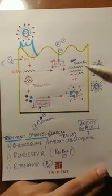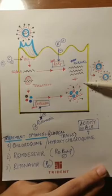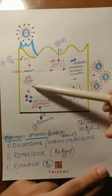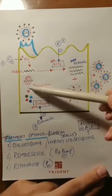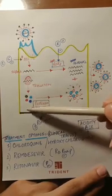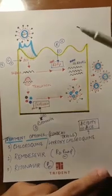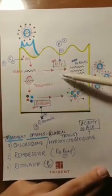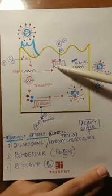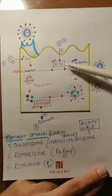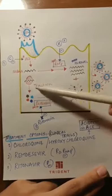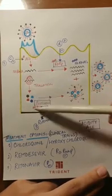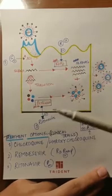The second thing is that it will go to the ribosomes and then there will be translation, and this will form various proteins. To repeat: here we have the single-stranded RNA. Either it will be acted upon by the RNA-dependent RNA polymerase, or it will be taken up by the ribosomes for translation into proteins.